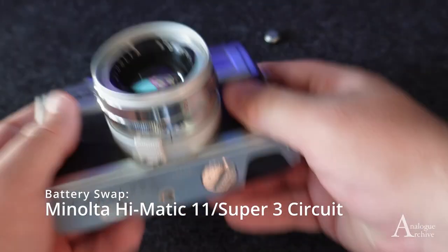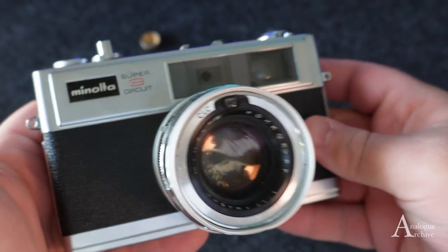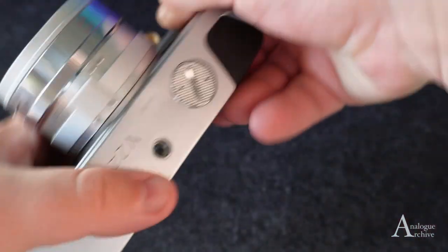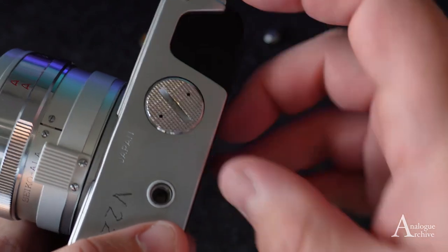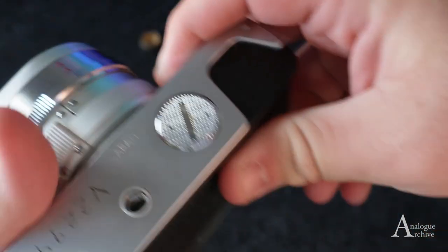Alright, here we are again with another video. Today we're going to be talking about the Minolta Hi-Matic 11/Super 3, depending on how you want to interpret what's on the camera. Today I'm going to show you how to put the battery in this camera.